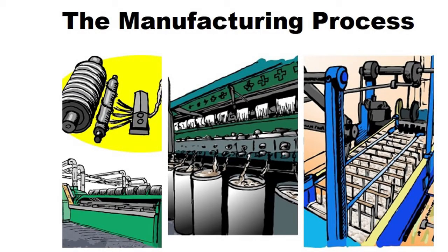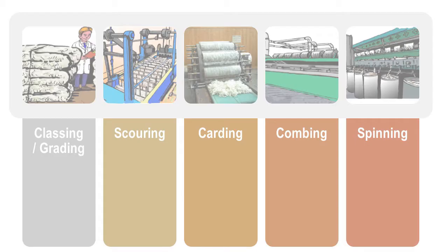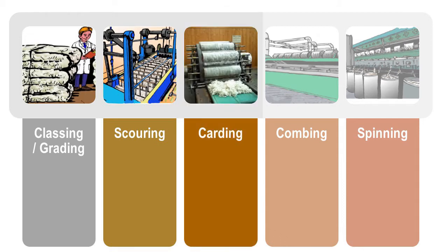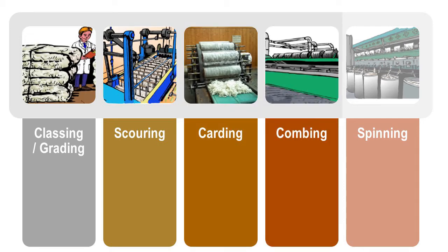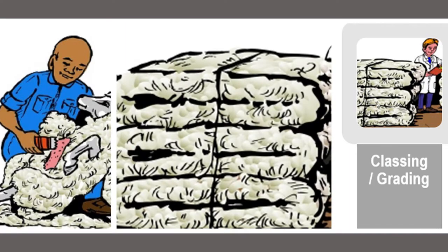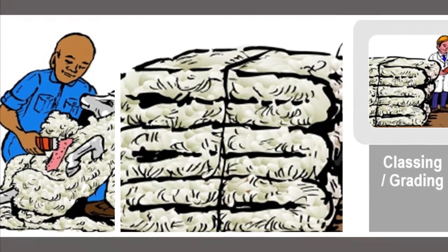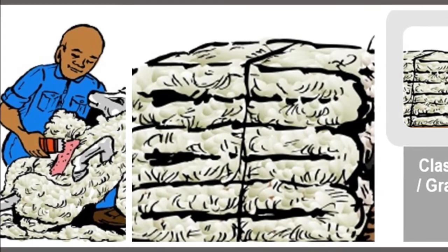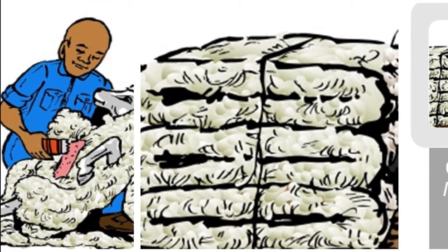Let's begin by reviewing the manufacturing process followed in mohair and wool factories. To convert mohair and wool into yarn, five steps are followed: classing and grading, scouring, carding, combing, and spinning. Like shearing, the grading of the raw mohair and wool essentially takes place before the bales are brought to the factory.